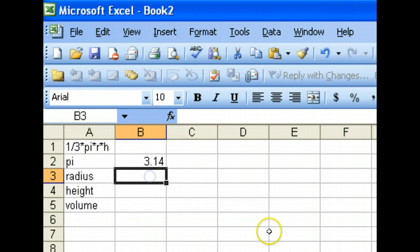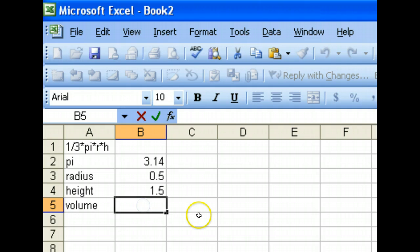So, pi is 3.14. Let's say the radius that we want to calculate is 0.5. Height is 1.5. So, the objective of the application here is to calculate the volume.